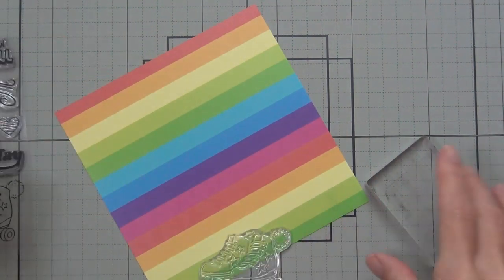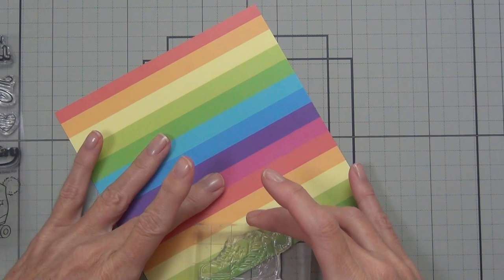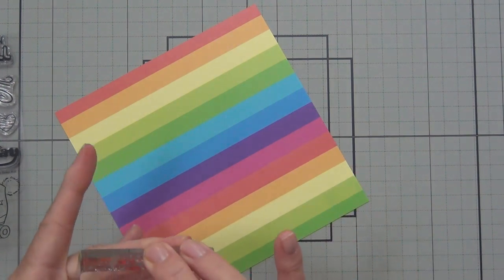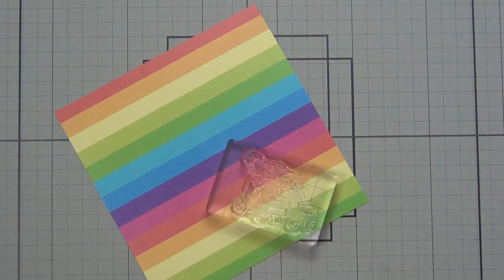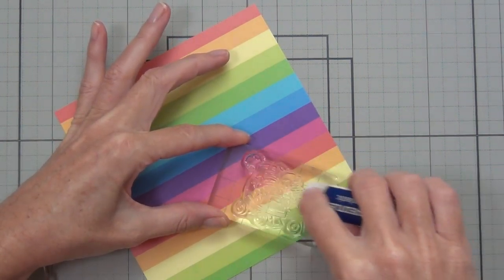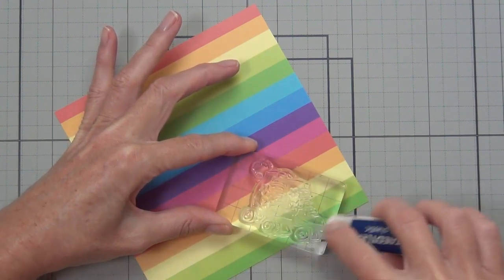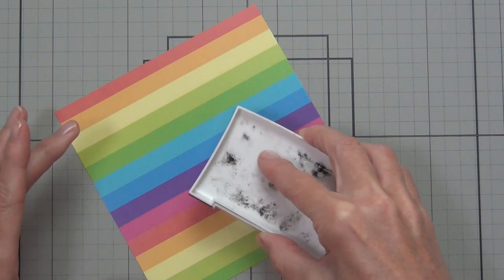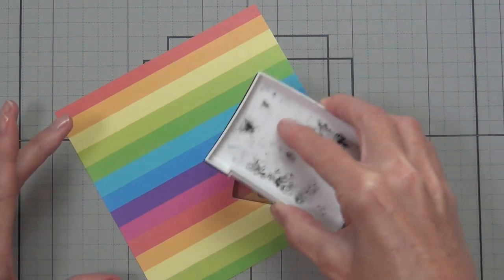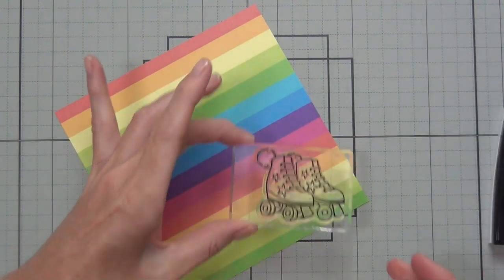I had a blast making this card. It's kind of a retro style card. I have the Let the Good Times Roll stamp set. There's some skates and some really fun fonts and sentiments, and this paper's from the Totally Rad paper set that has really bright fun colors. This is what inspired me to do my color blocking today.